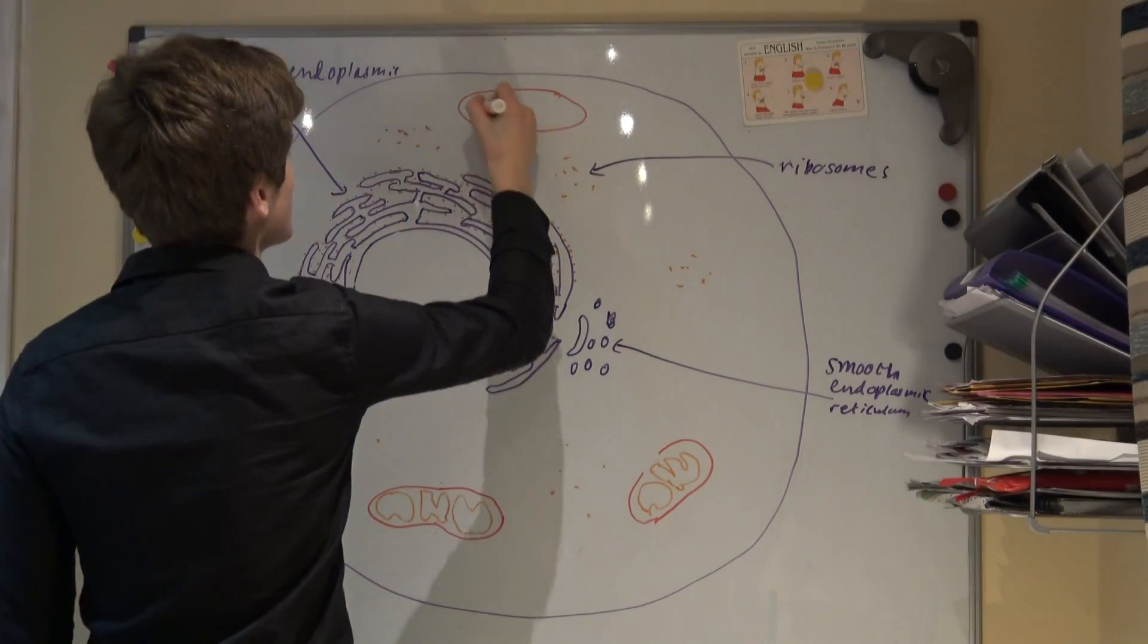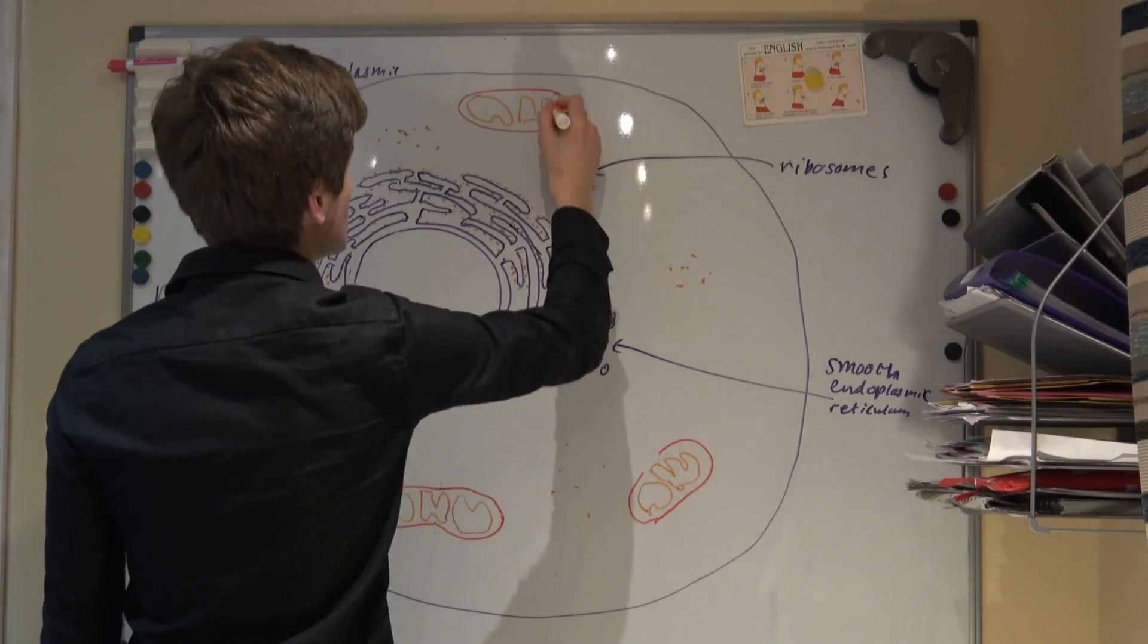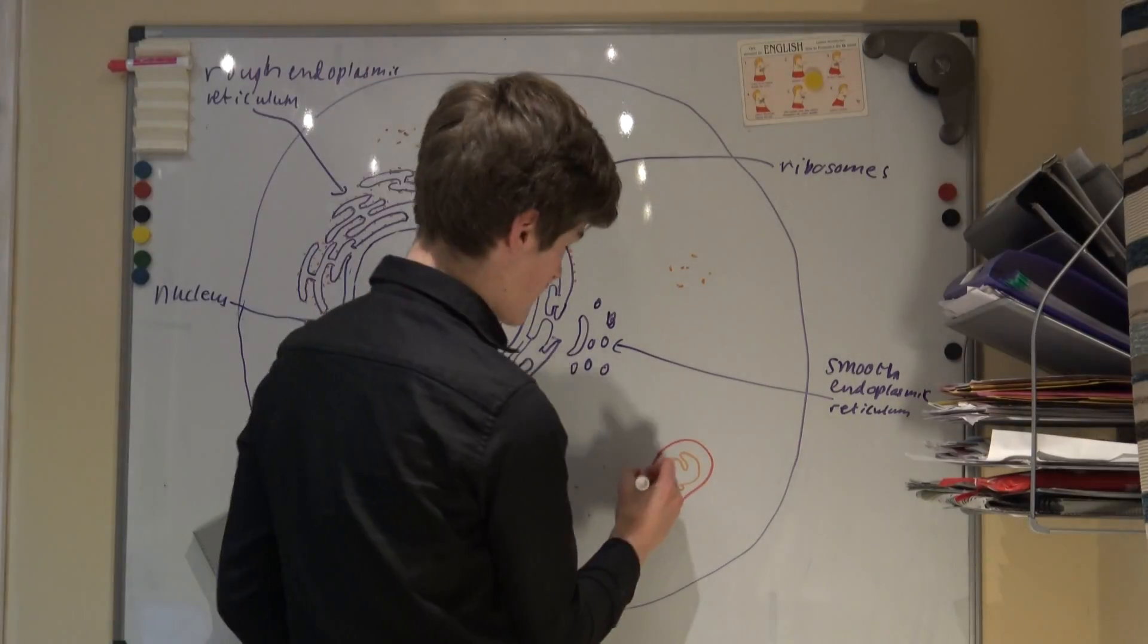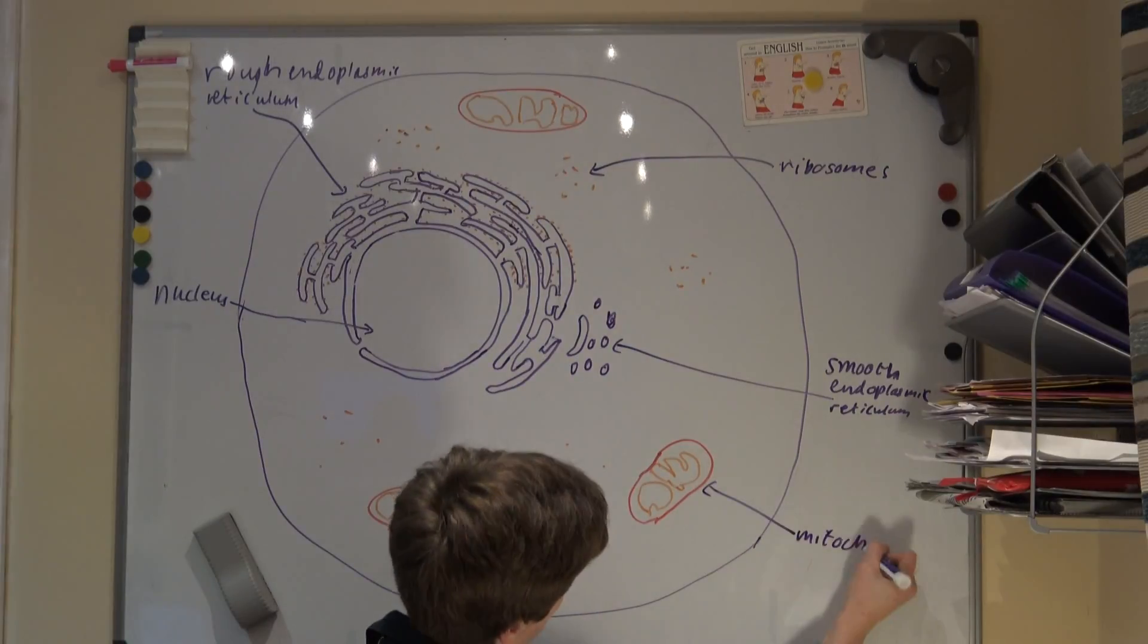The fluid interior of a mitochondria is called the matrix. Also, mitochondria actually contain a small amount of DNA called mitochondrial DNA, allowing them to produce their own enzymes and reproduce themselves.